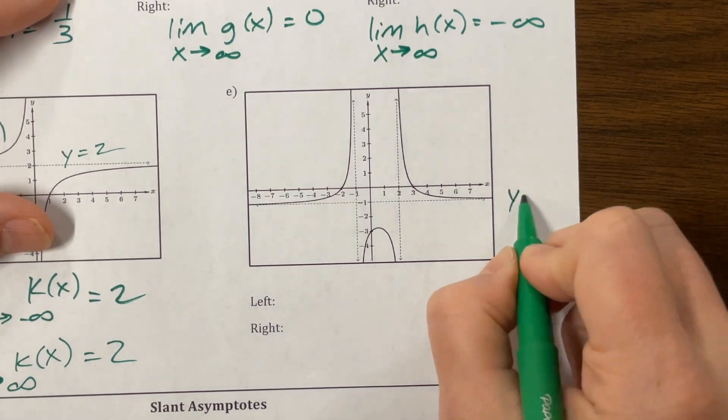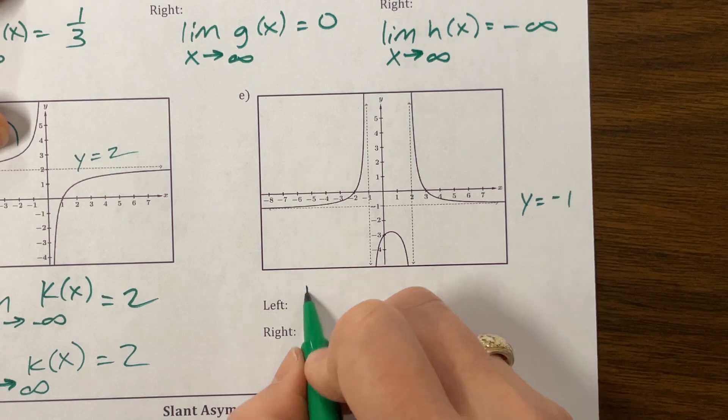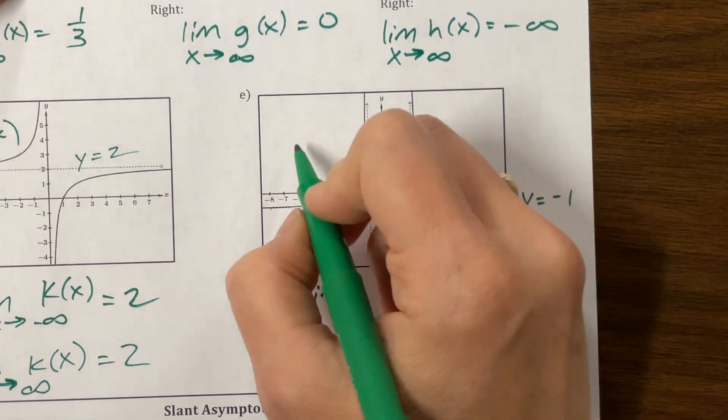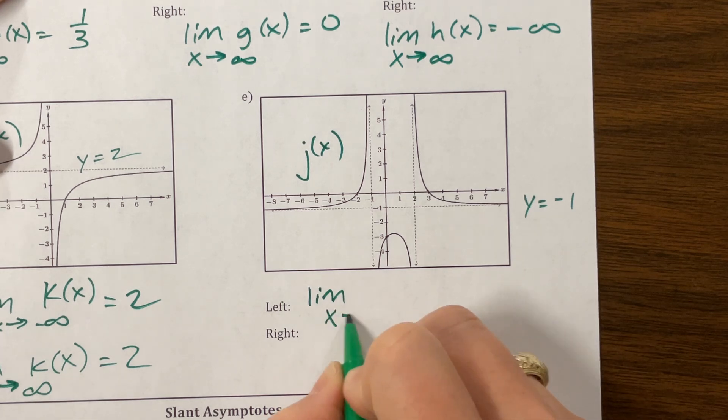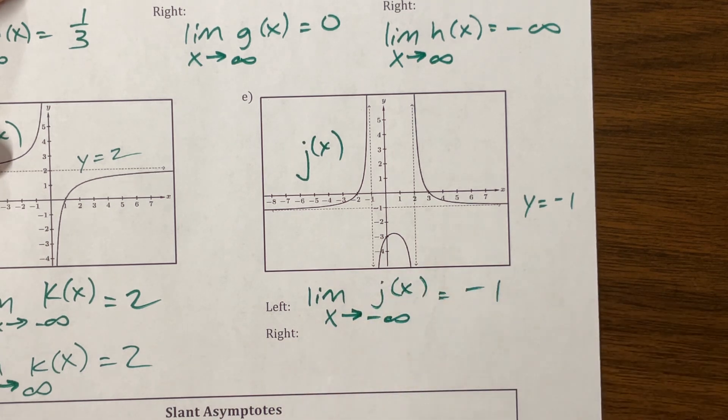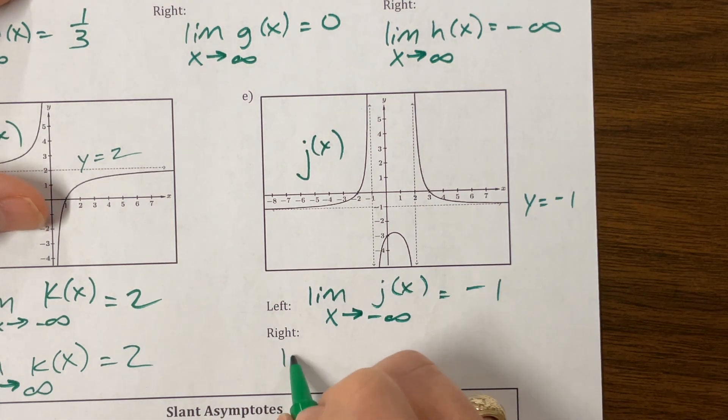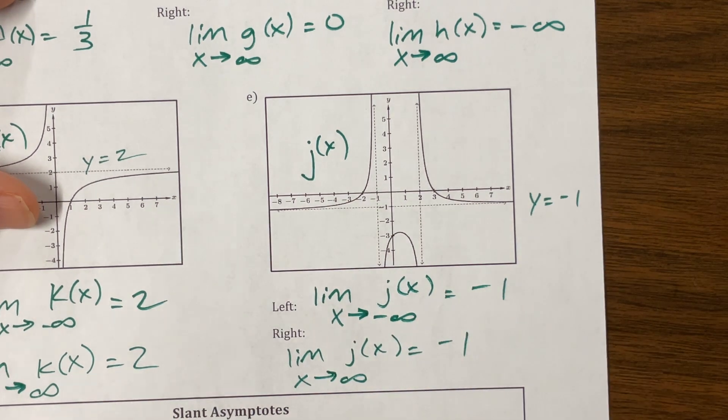Okay. On this one, this appears to have an asymptote of y equals negative one. We don't care what's happening in the middle when they talk about end behavior. So the limit, we'll call this one j(x) just to change it up. The limit as x goes to negative infinity of j(x) will be equal to negative one, the asymptote. Same idea here. The limit as x goes to positive infinity of j(x) is equal to negative one.